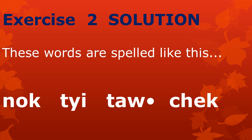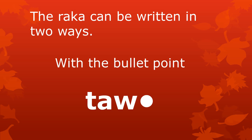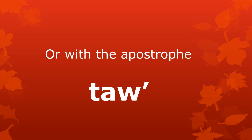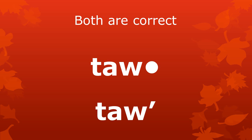Now let's spell together. The letter RAKA can be written in two ways: with the bullet point, as you can see here in the word TAU, or RAKA can be written with the apostrophe, as you can see here in the same word TAU. So both these spellings are correct. The apostrophe is easy to use when you type on a computer or mobile phone, or when you write something by hand.